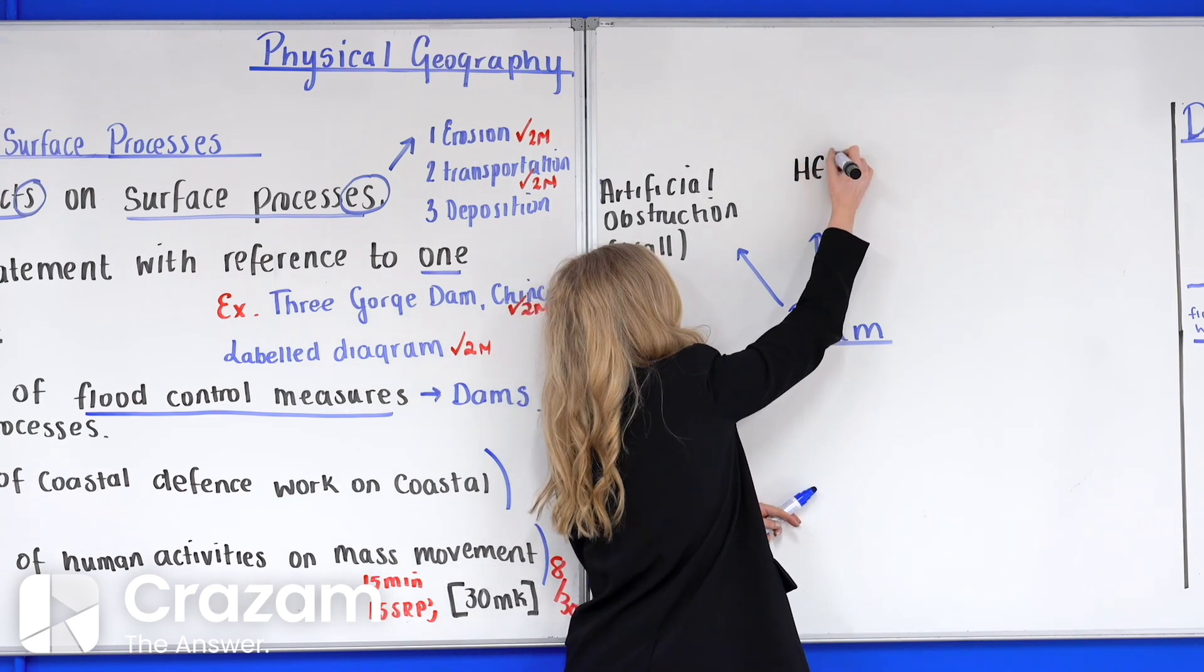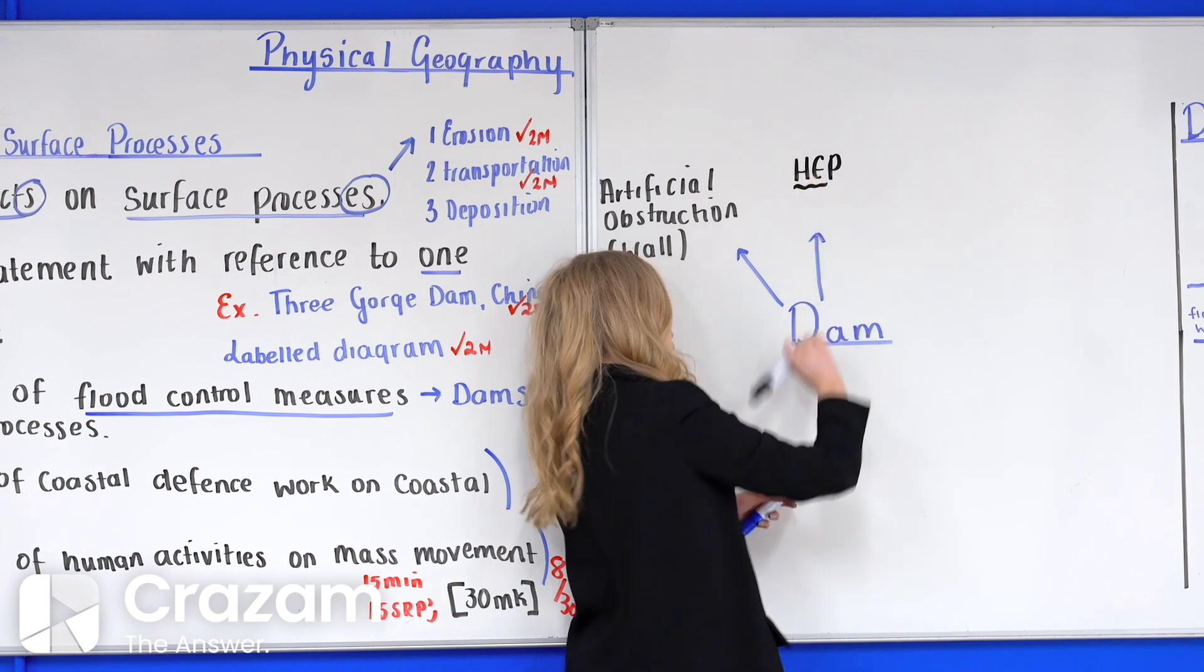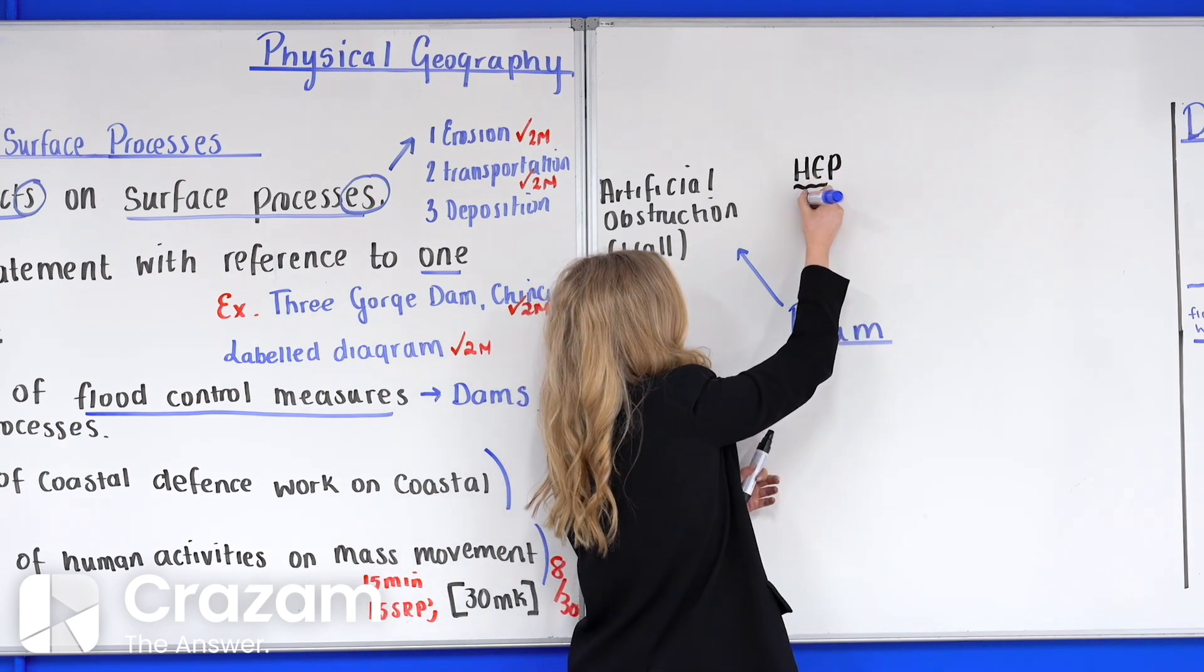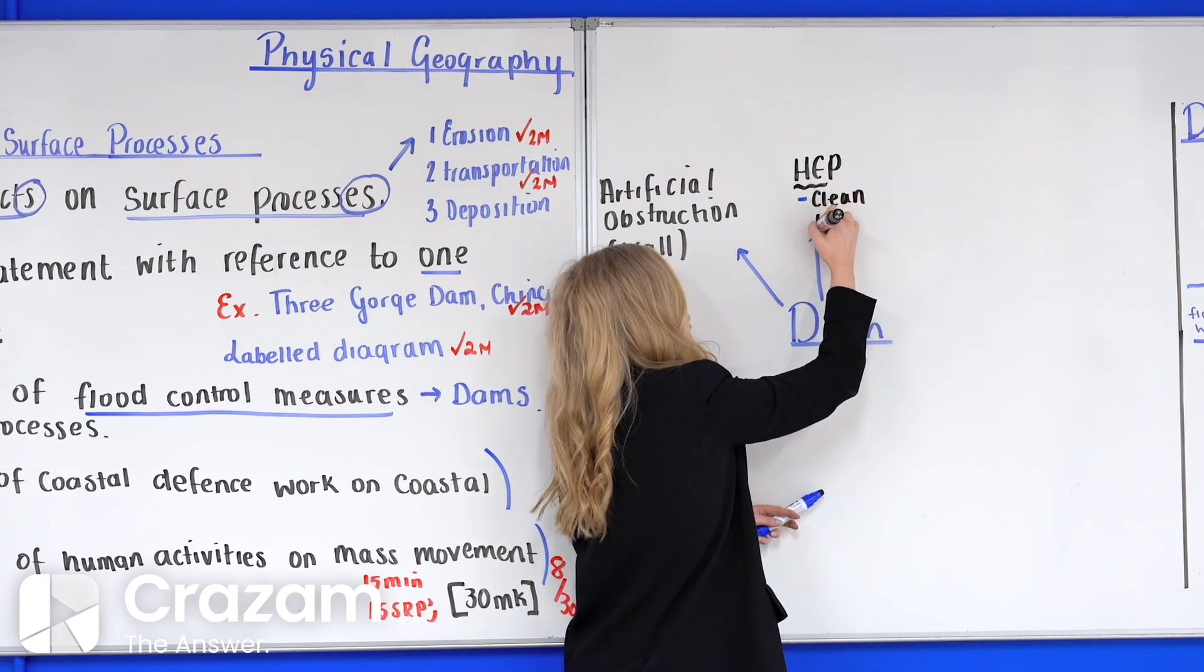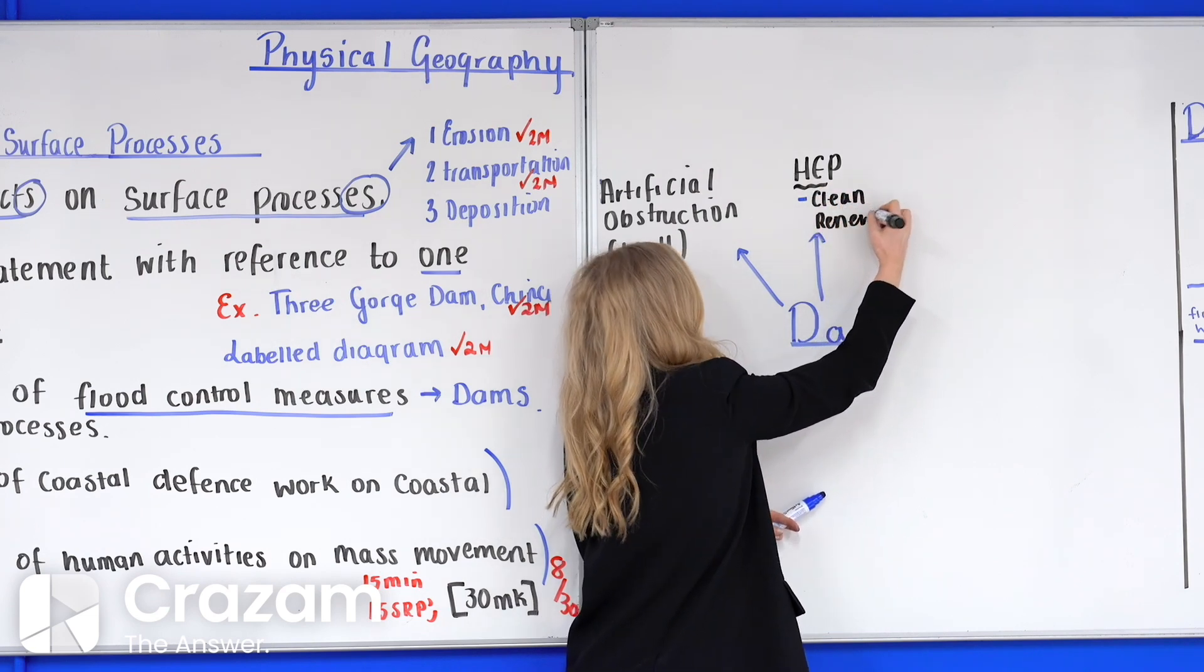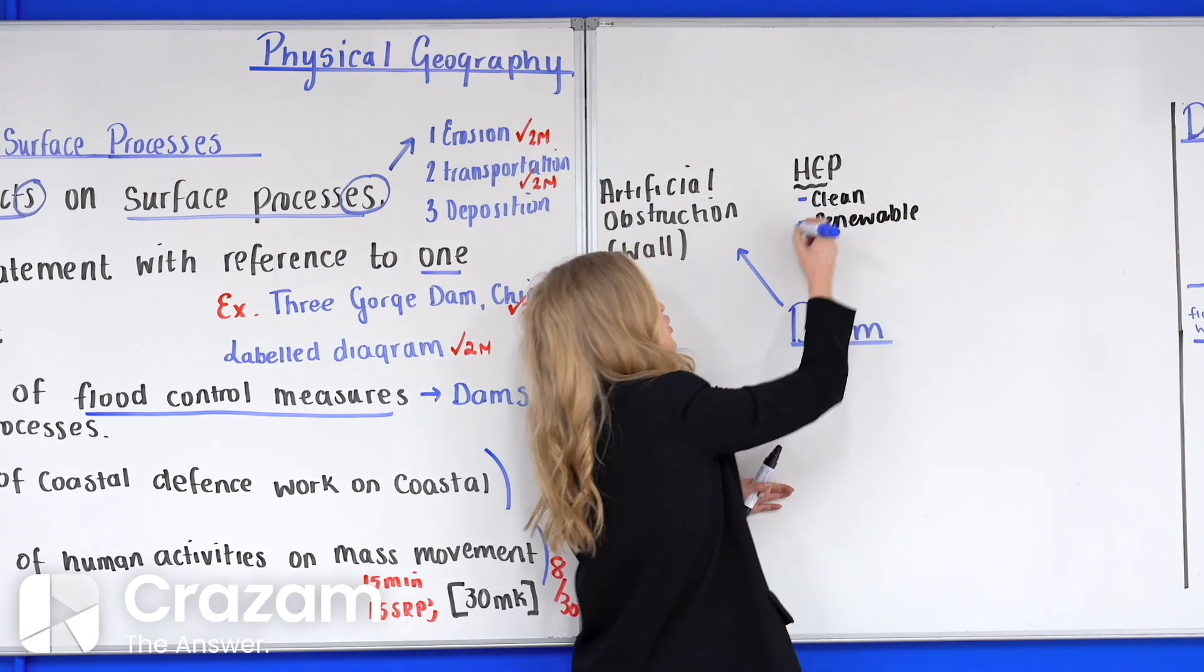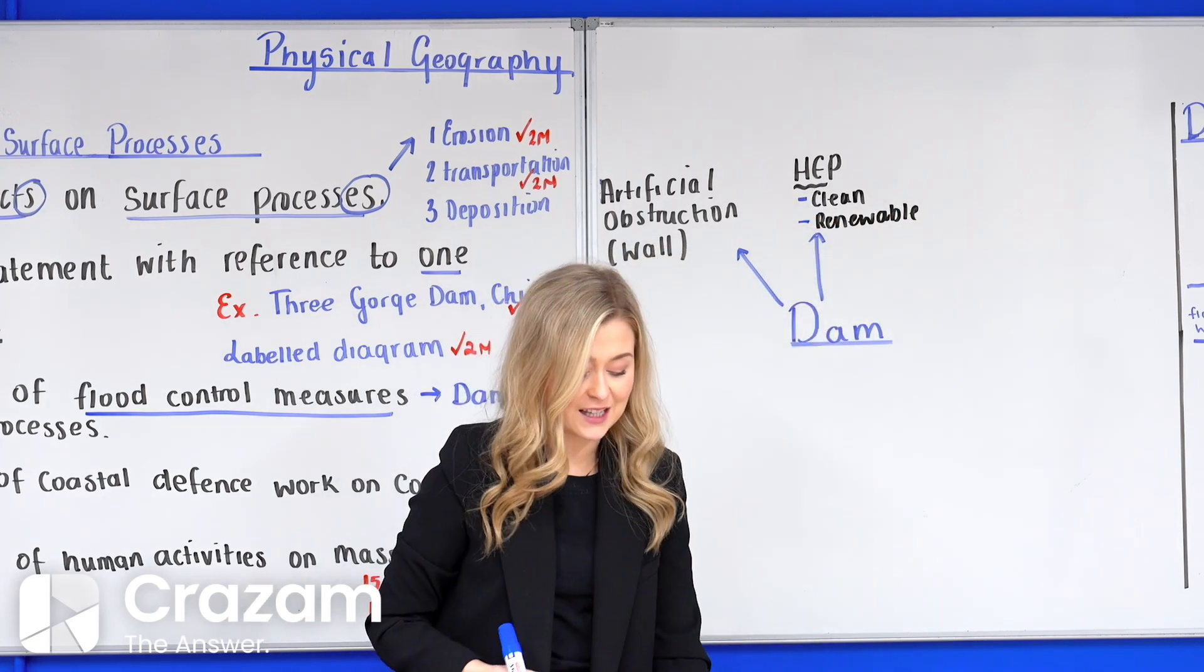Now dams are predominantly used for the generation of hydroelectric power, HEP. Hydroelectric power is clean and it is renewable. It reduces the dependency on fossil fuels such as oil and gas. So the second thing I'm going to pop down here is just HEP, hydroelectric power, and in relation to HEP I'm going to pop down clean and renewable.